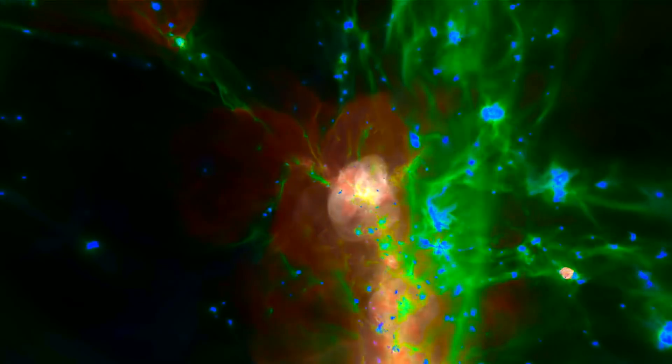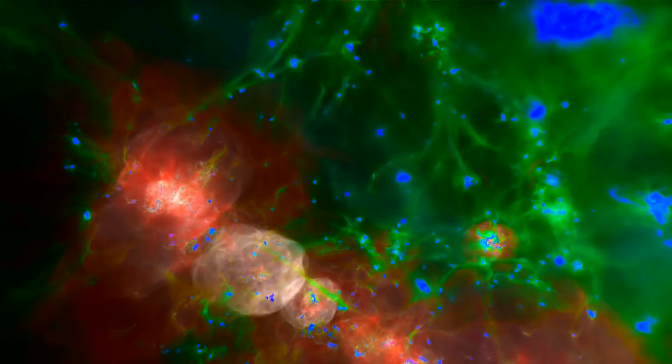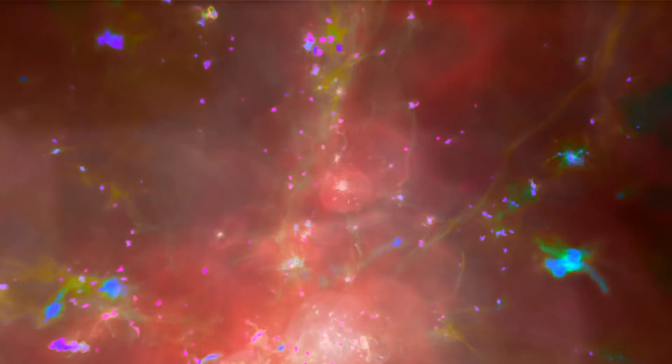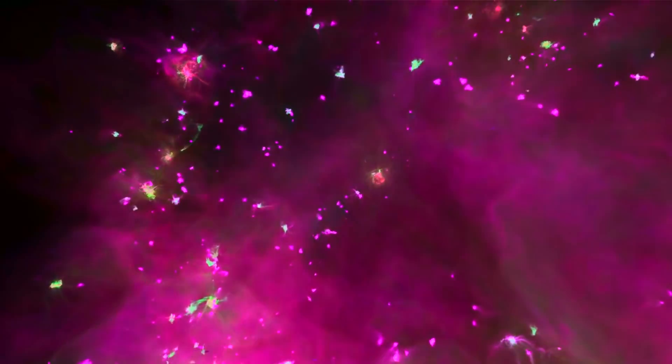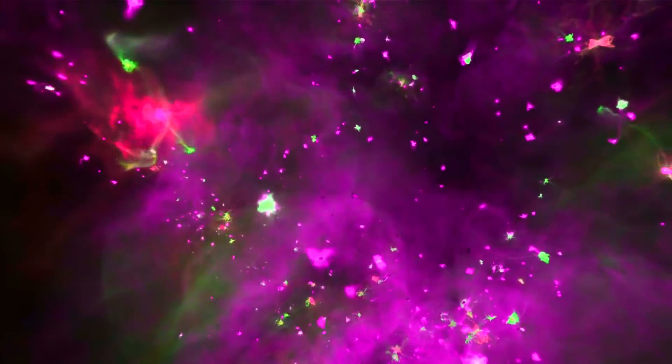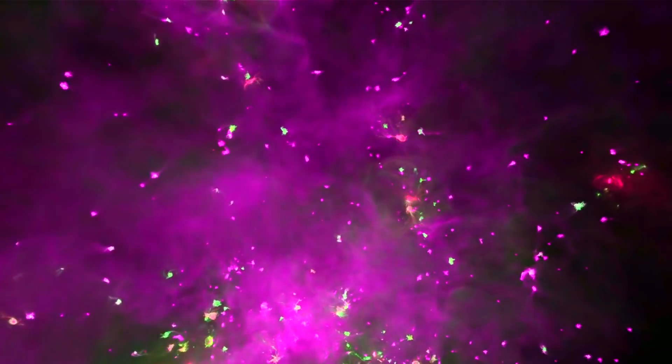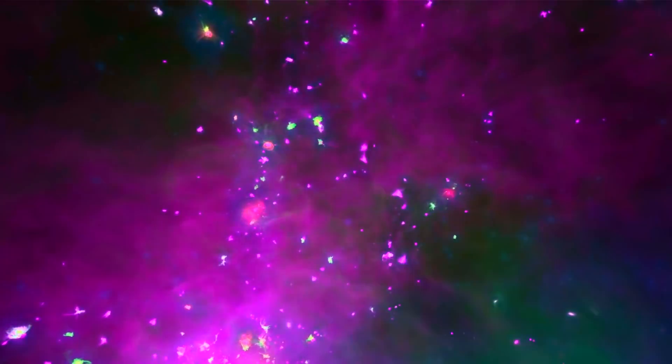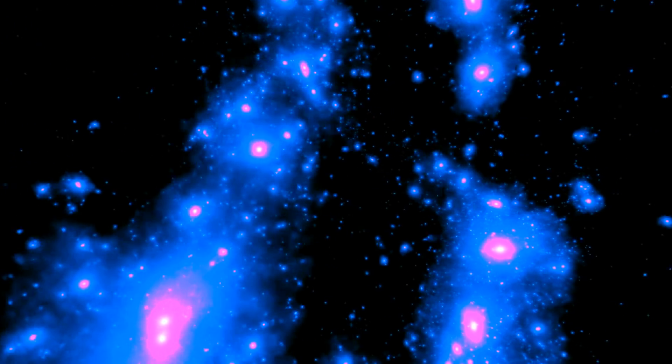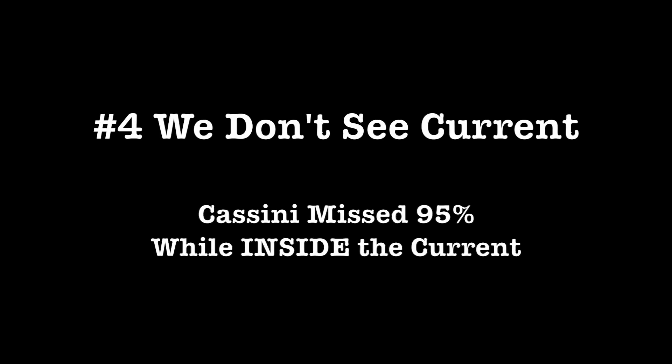This is where a planetary science mission that was once again ignored by mainstream cosmology really changed the game for the plasma. Cassini flew through the South Pole jets of Enceladus and detected only 5% of the electric current that we know must be there due to the magnetic fields detected. It was hidden by dust, which we also had trouble seeing initially, and if we missed it while inside it, we see nothing of the true nature of these currents in deep space.